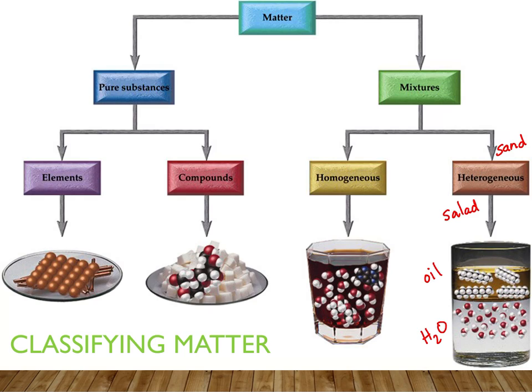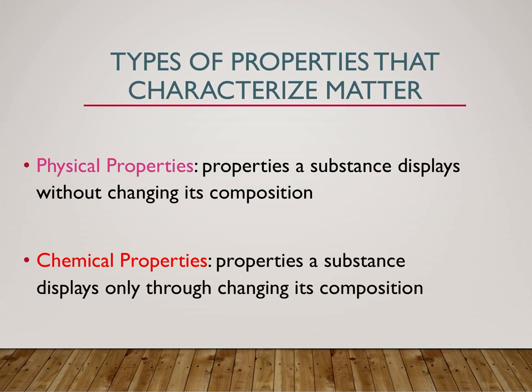So these are our four different categories of matter: pure substances — elements or compounds — and our mixtures, either homogeneous, which will look the same throughout, or heterogeneous, where you can see the individual particles or it'll look different.